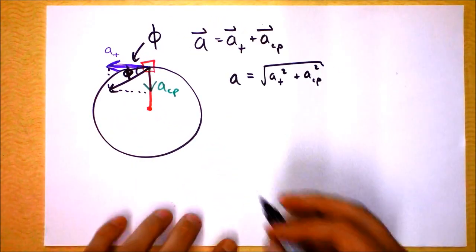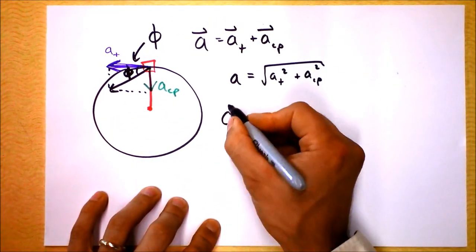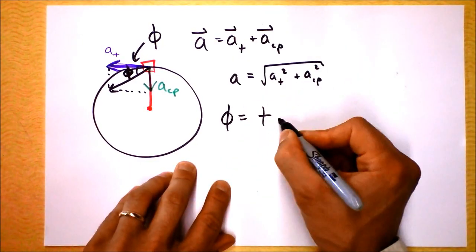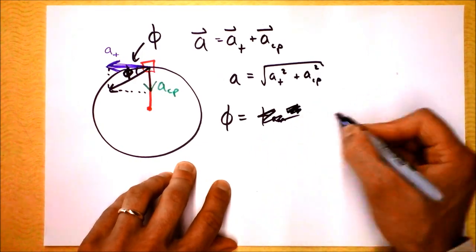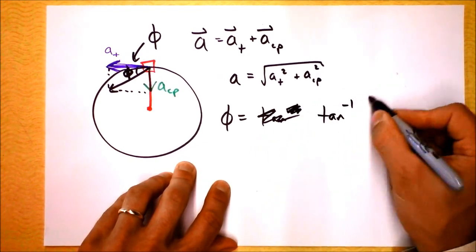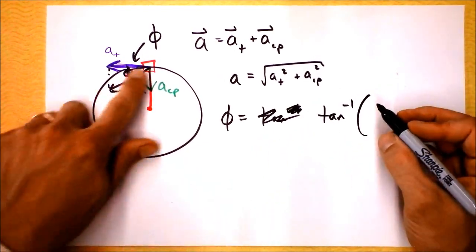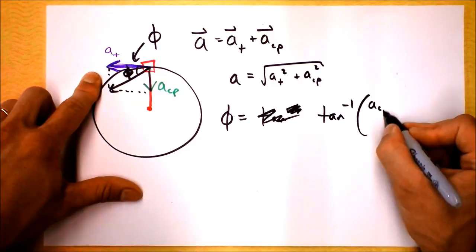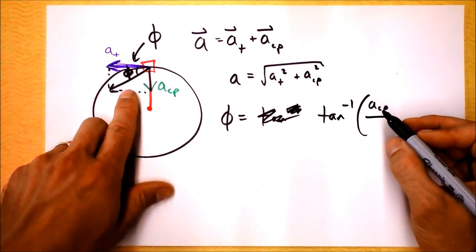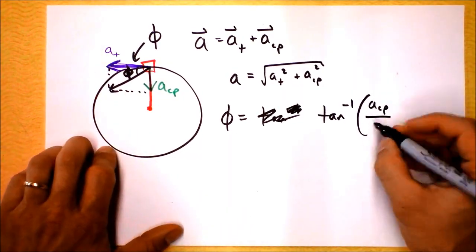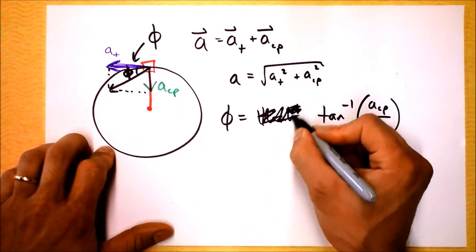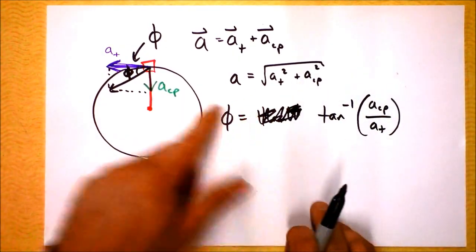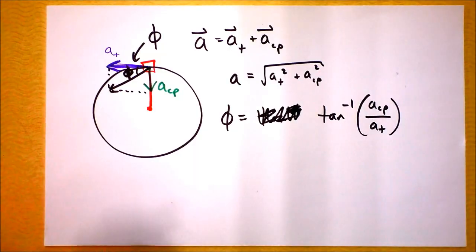We can also find the direction of the total acceleration using the angle φ. That angle φ equals the inverse tangent of the opposite side (centripetal acceleration) divided by the adjacent side (tangential acceleration): φ = arctan(a_CP / a_T). That tells you the direction of the overall acceleration of the object.